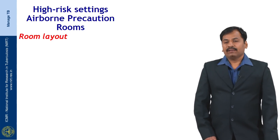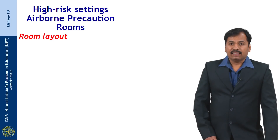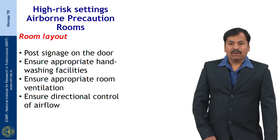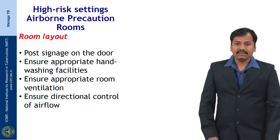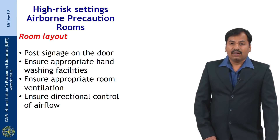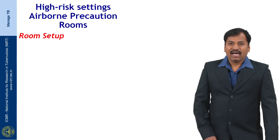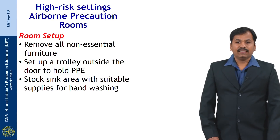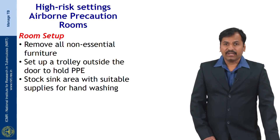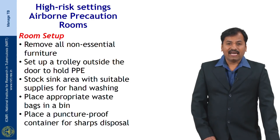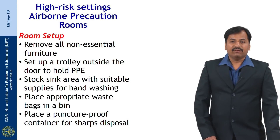For any high risk settings, they should be airborne precaution rooms and the room layout should include signages on the doors, ensuring appropriate hand washing facilities, ensuring appropriate room ventilation and ensuring directional control of air flow. In the room, try to remove all non-essential furniture. Set up a trolley facility outside the door to hold personal protective equipment. Stock sink areas with suitable supply of hand washing materials and place appropriate waste bags in a bin.